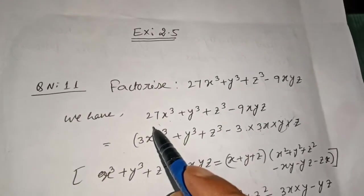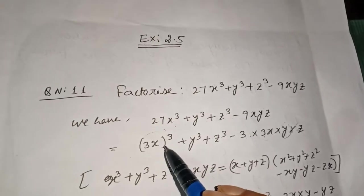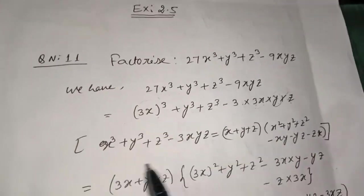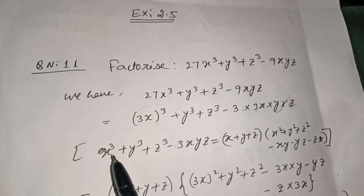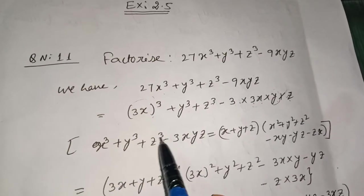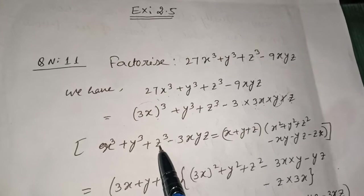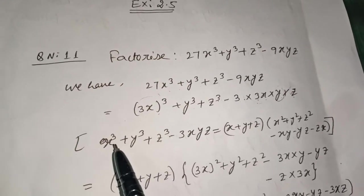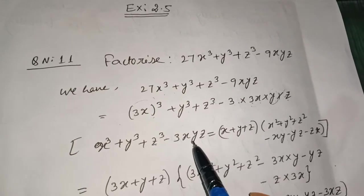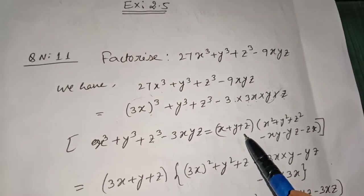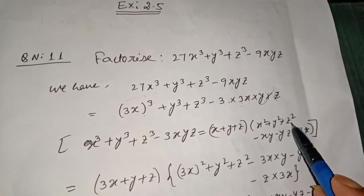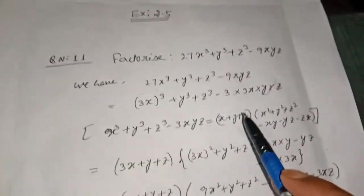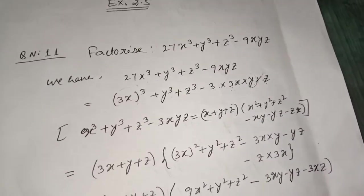So if we treat 3x as x, we can apply the identity: x³ + y³ + z³ - 3xyz = (x + y + z)(x² + y² + z² - xy - yz - zx). I already provided the list of identities. We will use this formula to factorize this expression.